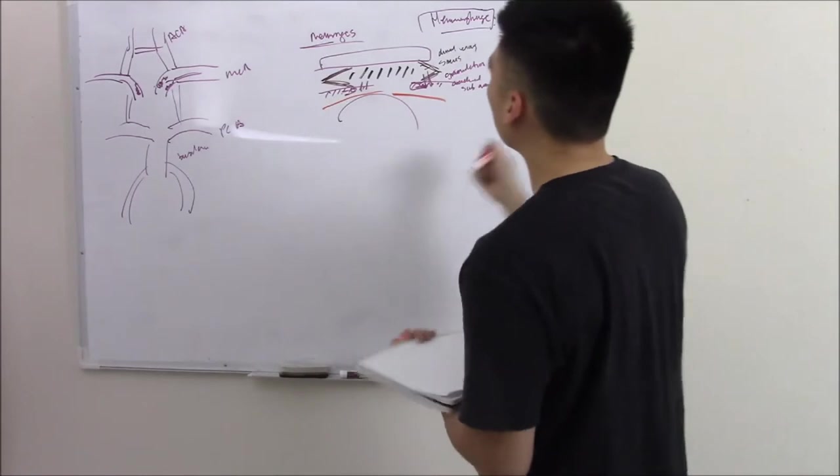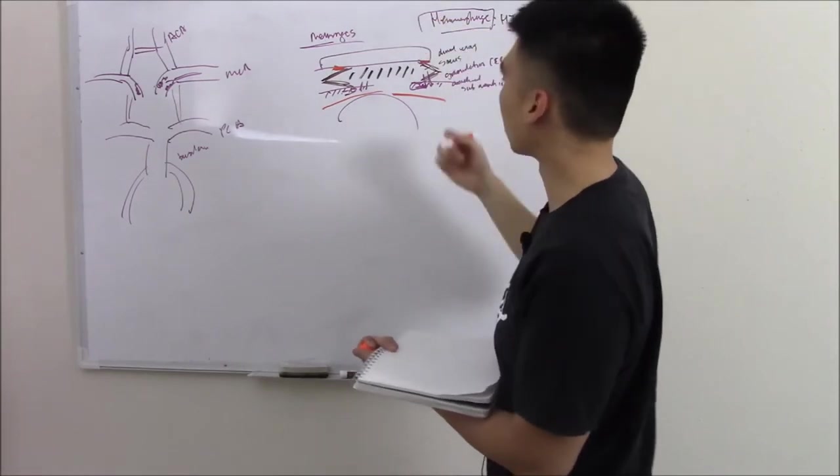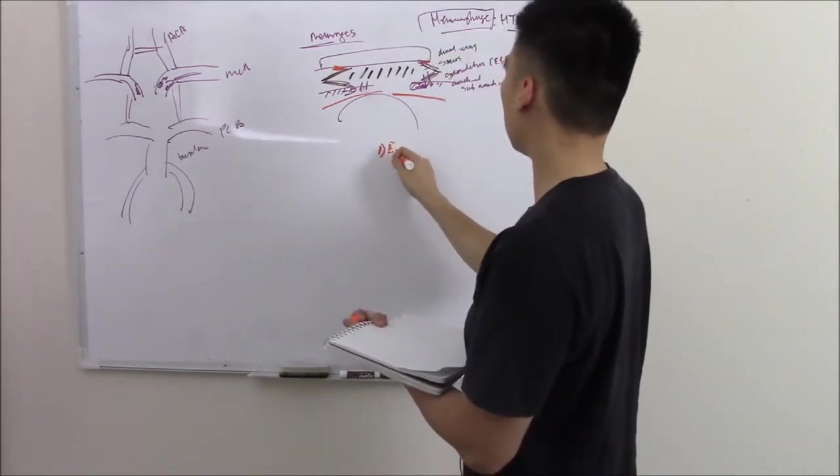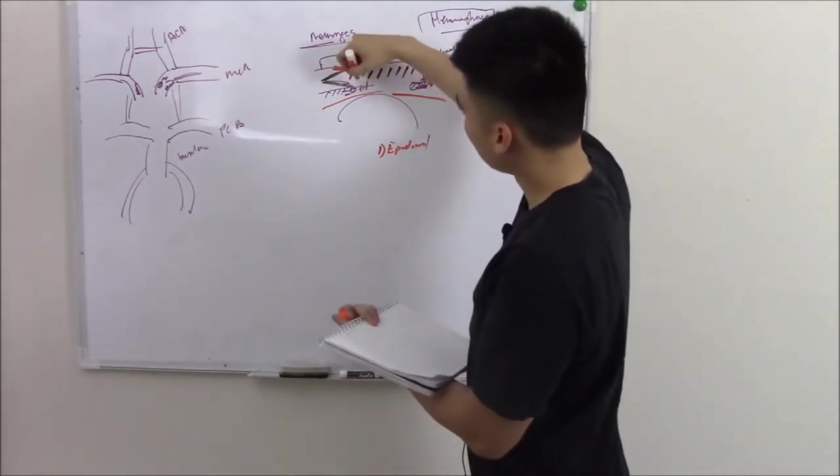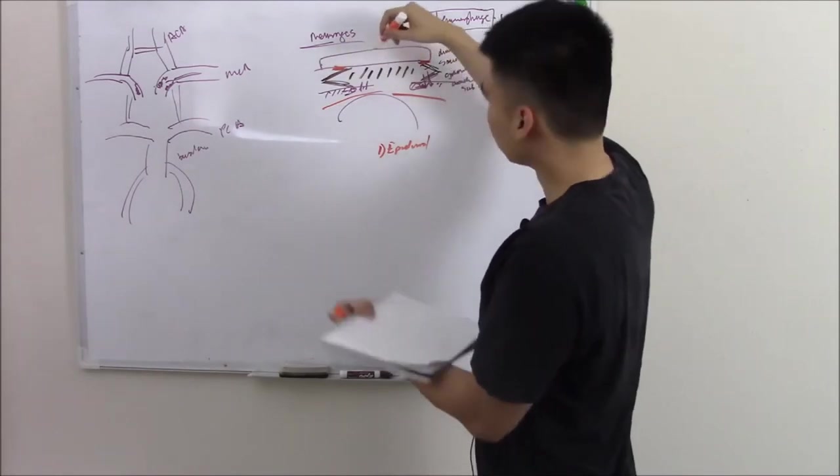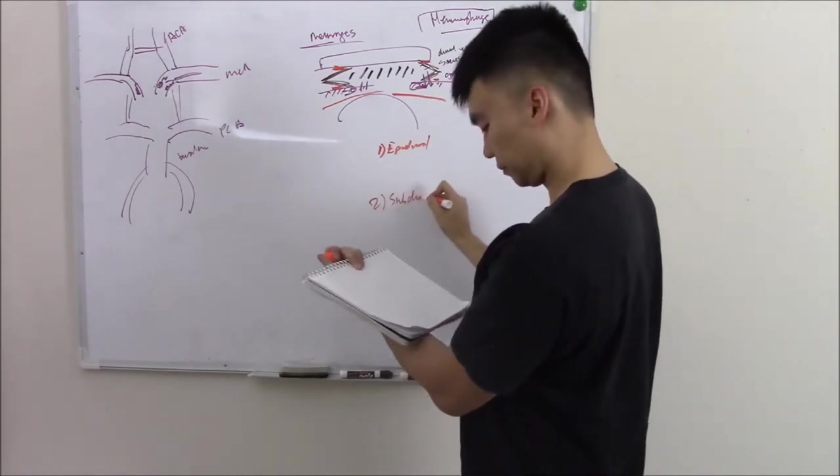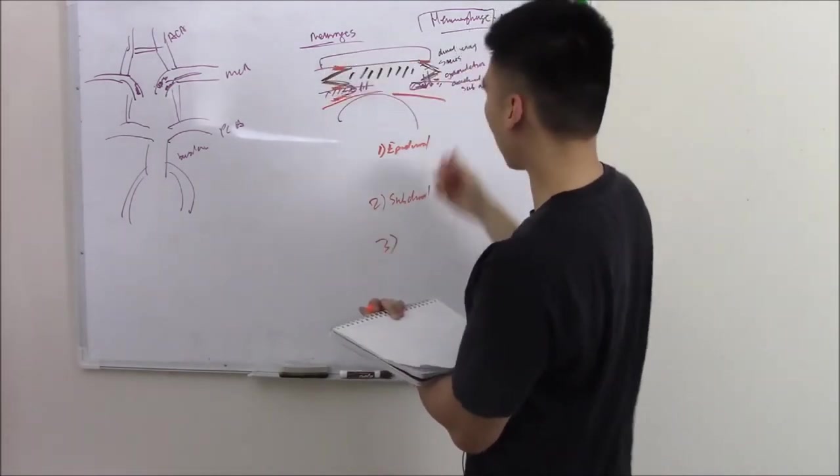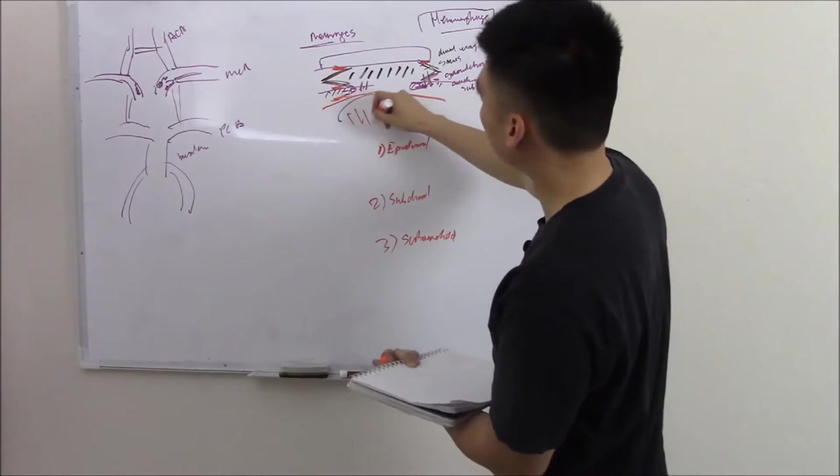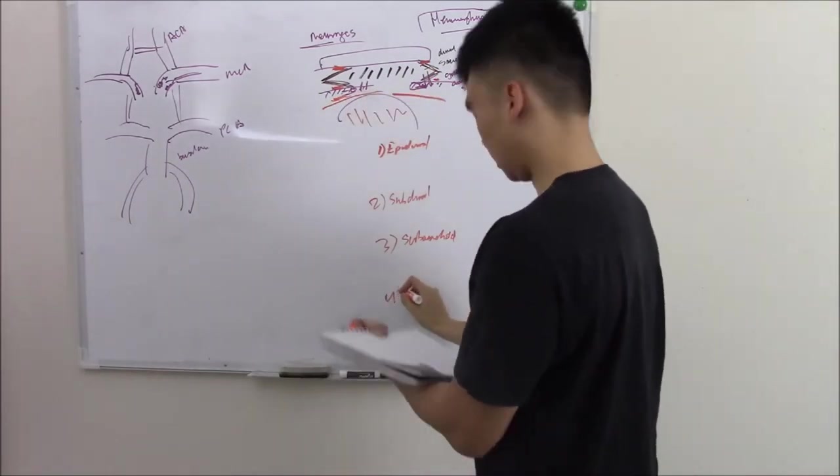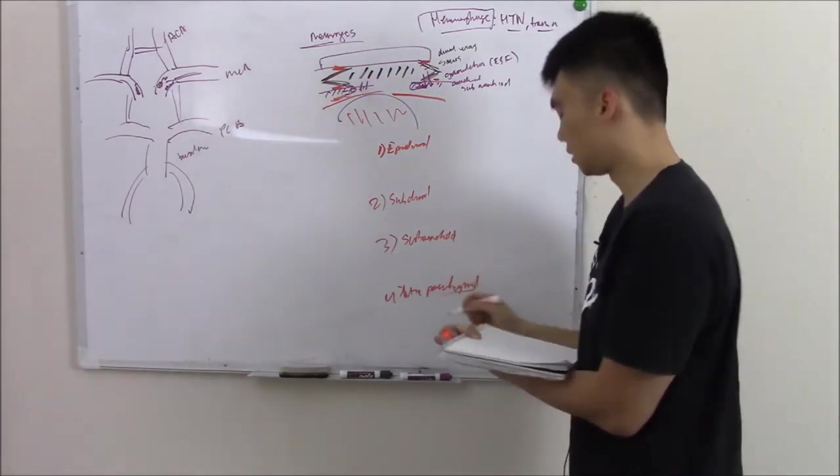So what are some spaces where blood can collect? Well, it can collect above your dura, in between your dura and your skull. We call that epidural. Or above the dura. It can collect below the dura, or subdural. It can collect below the arachnoid, in the subarachnoid space. We call that subarachnoid. And then it can collect in the brain itself. We call that intraparenchymal. Basically inside the brain matter.